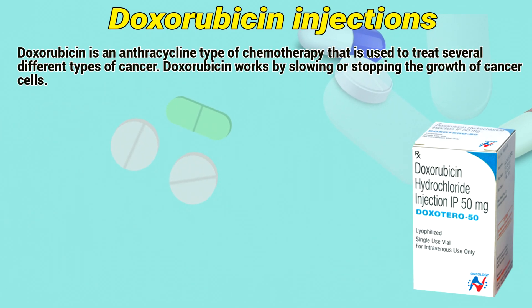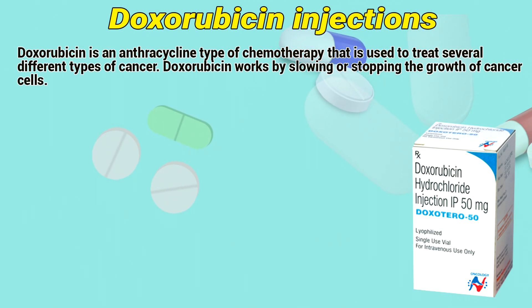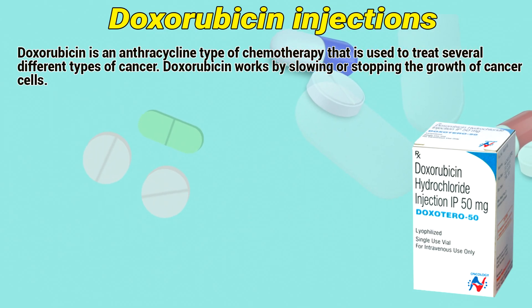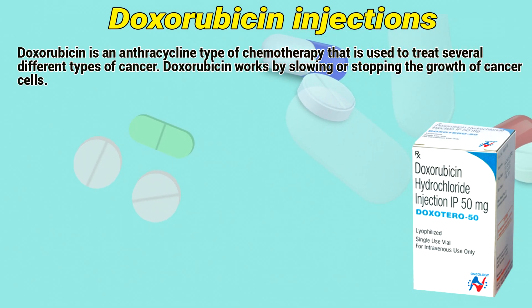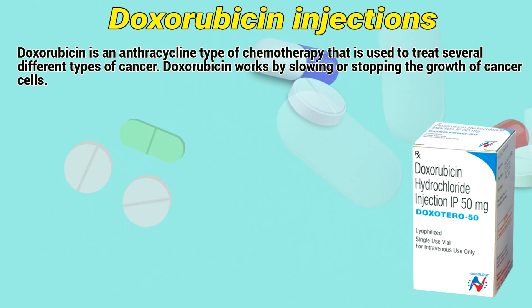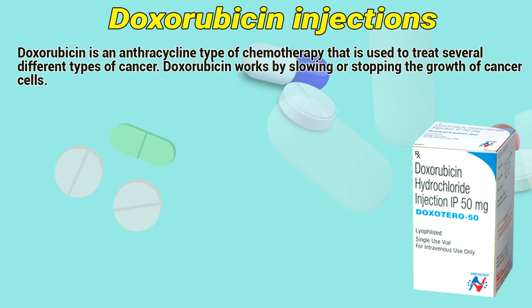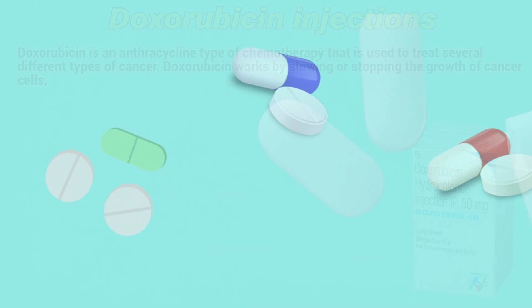Doxorubicin is an anthracycline type of chemotherapy that is used to treat several different types of cancer. Doxorubicin works by stopping the growth of cancer cells.